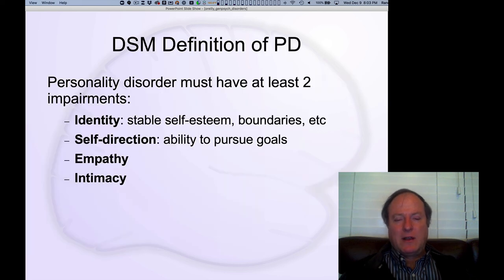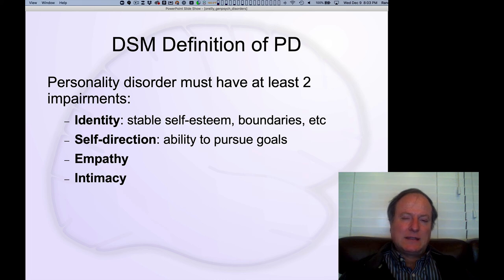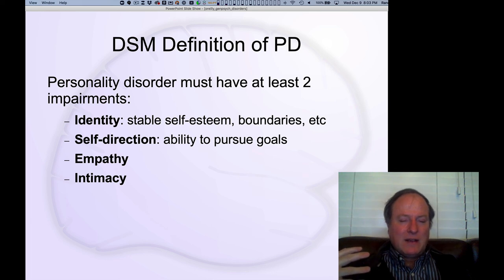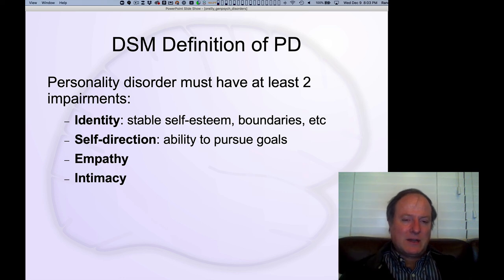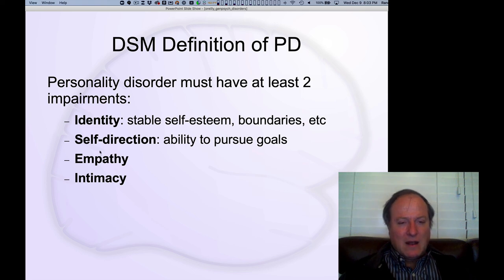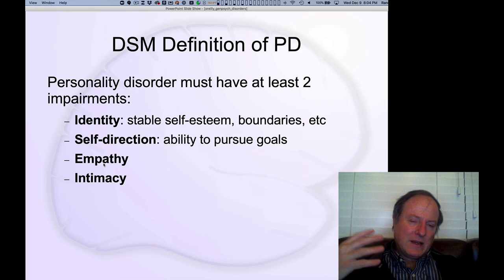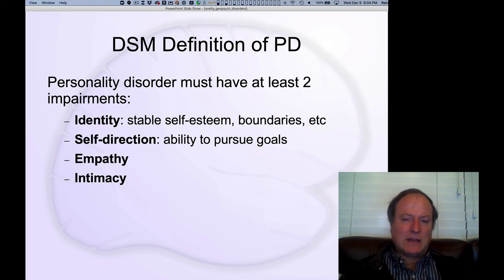The third category of major types of disorders defined by the DSM is personality disorder. Personality disorder is somewhat puzzling — it has a distinction from the other major disorders that is a little hard to understand. It's more associated with social aspects of people's behavior, some challenge to identity, deficits in empathy or intimacy — a social and trait-like dimension of the disorder.